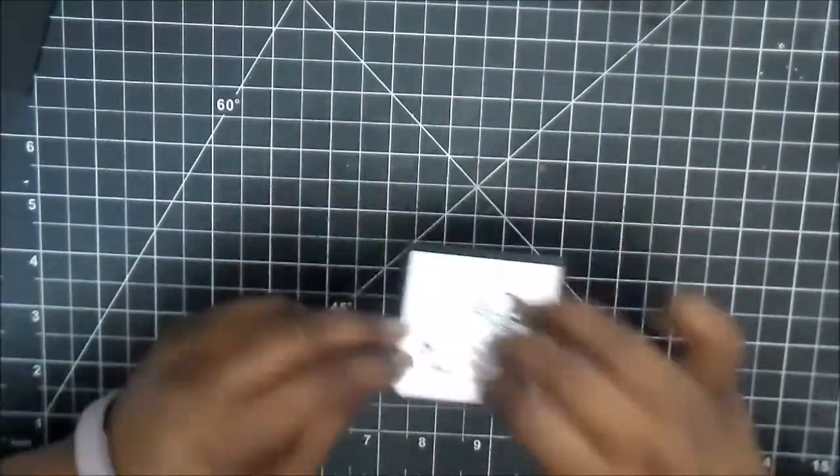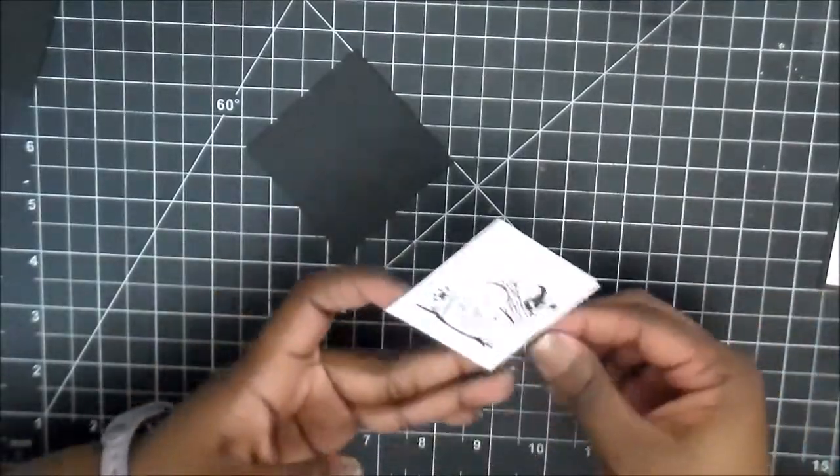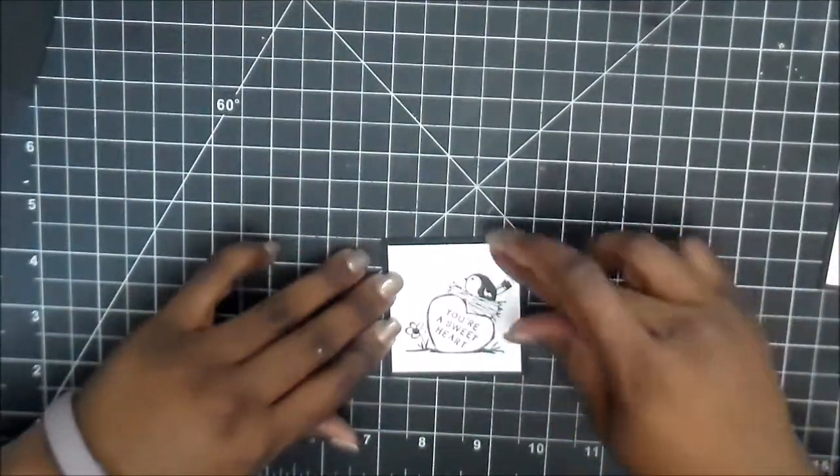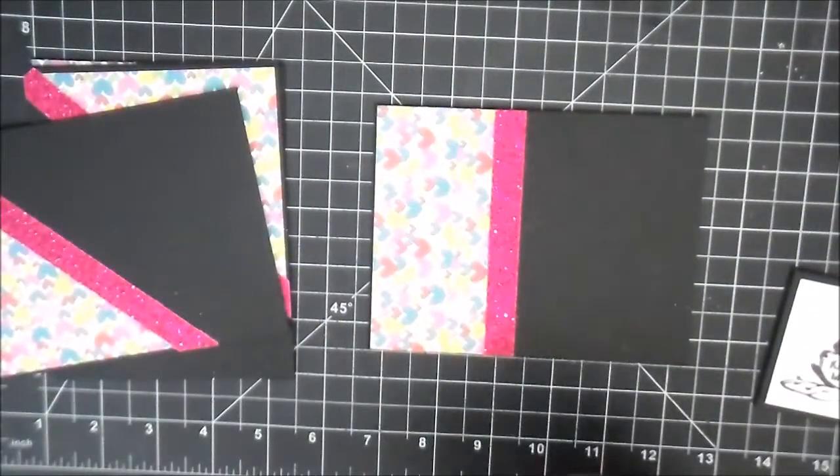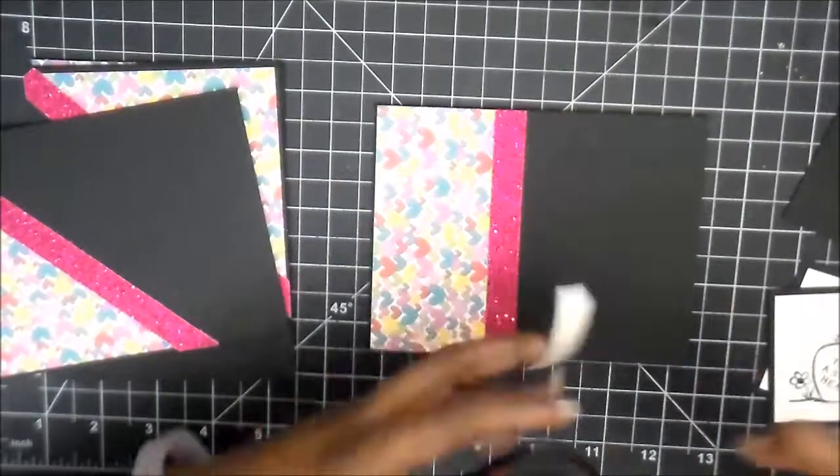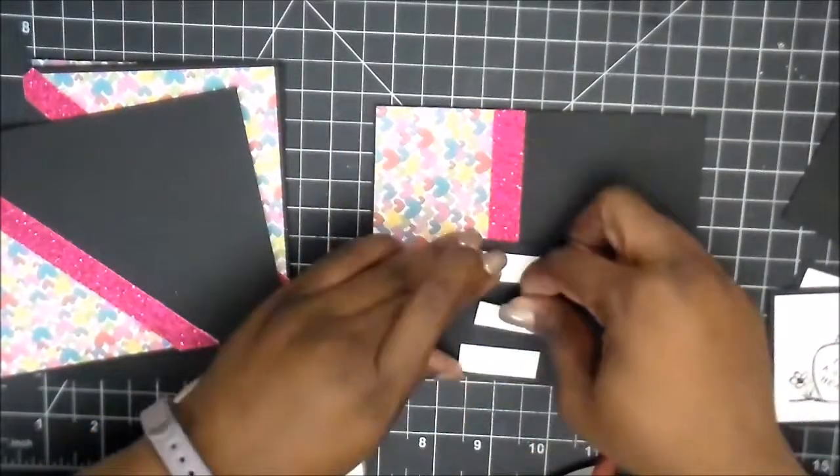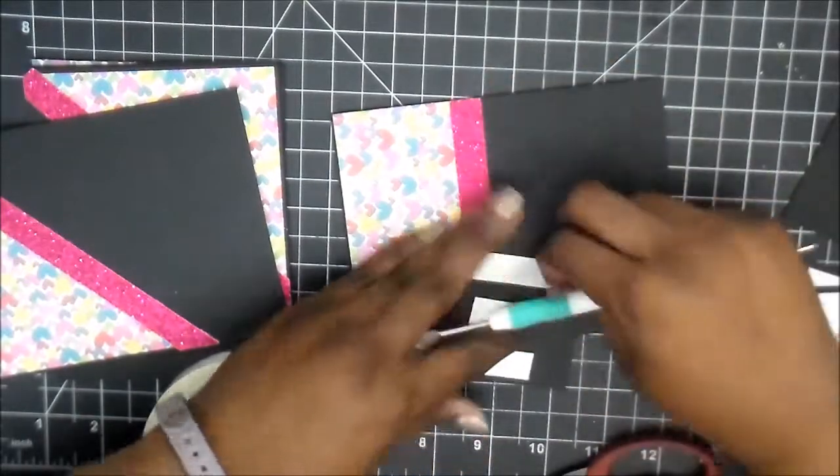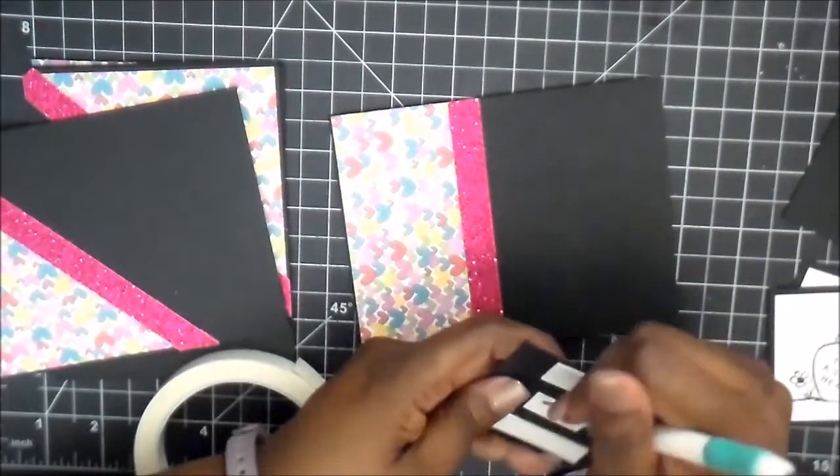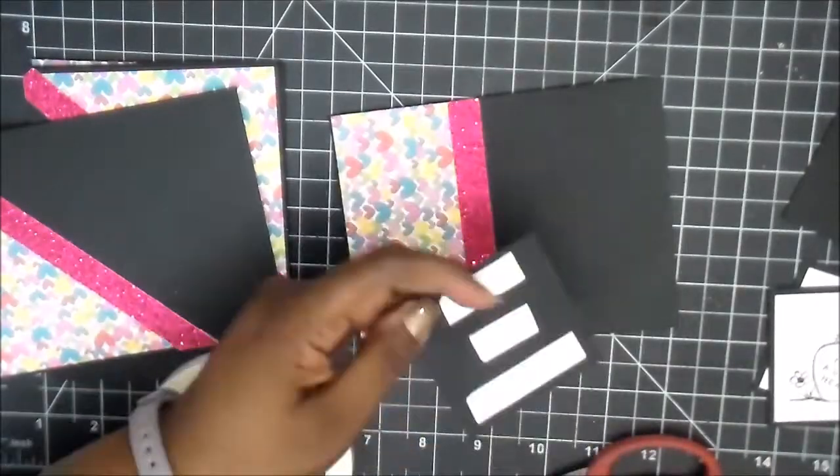I didn't on this particular video. I just matted them and used foam tape to give them a little bit of dimension. And I made these squares for the focal images two and a half by two and a half. And the matte is, the mattes are two and a half by two and a half. And then the white paper that we actually stamped on, that was two and a quarter by two and a quarter.